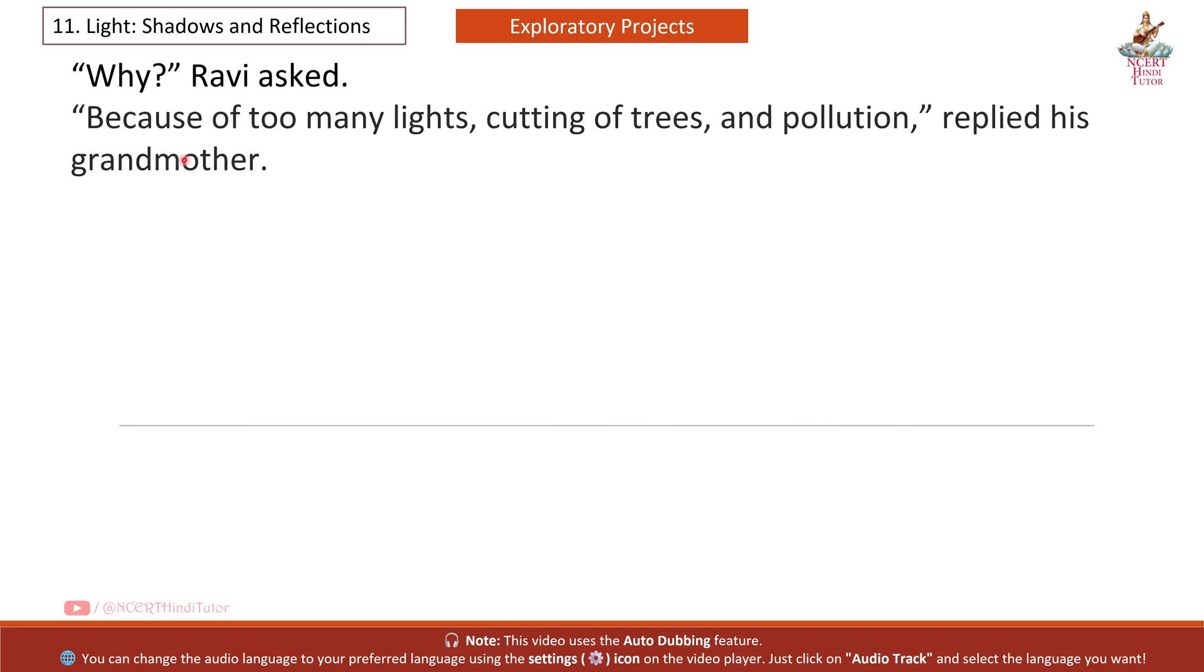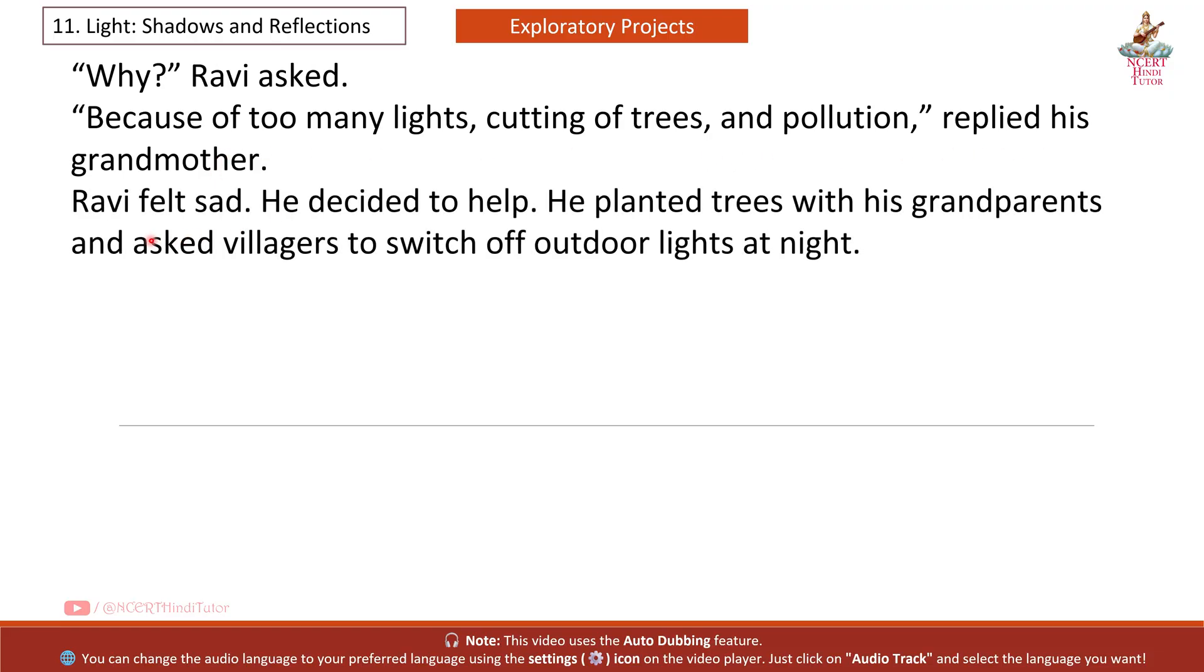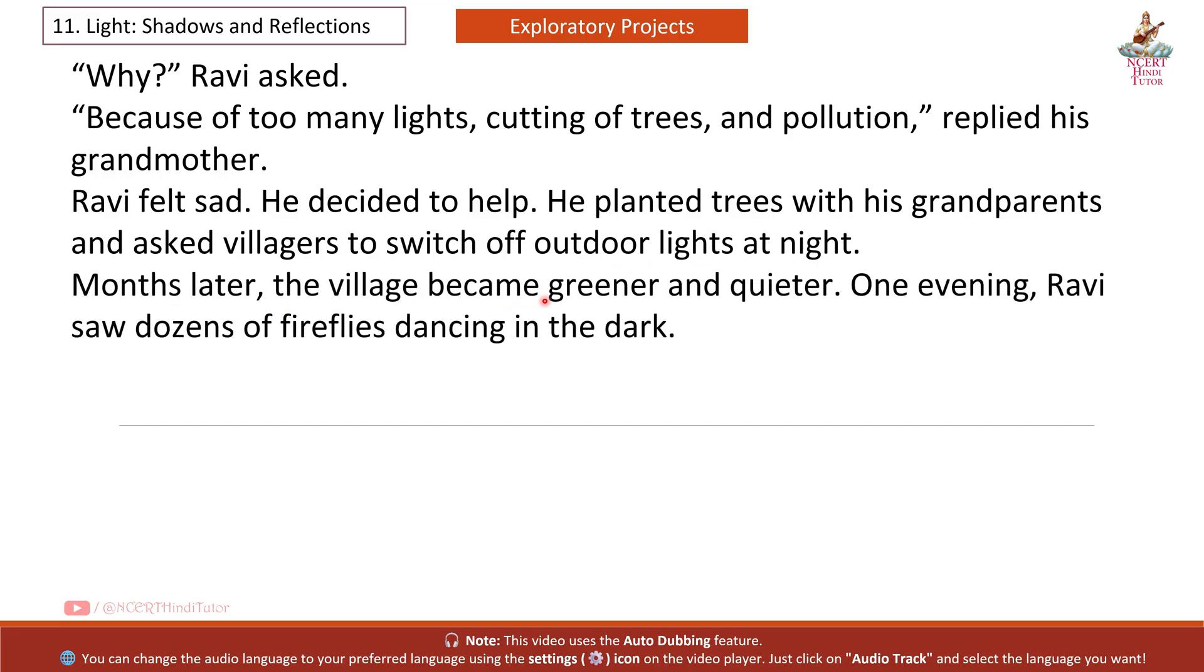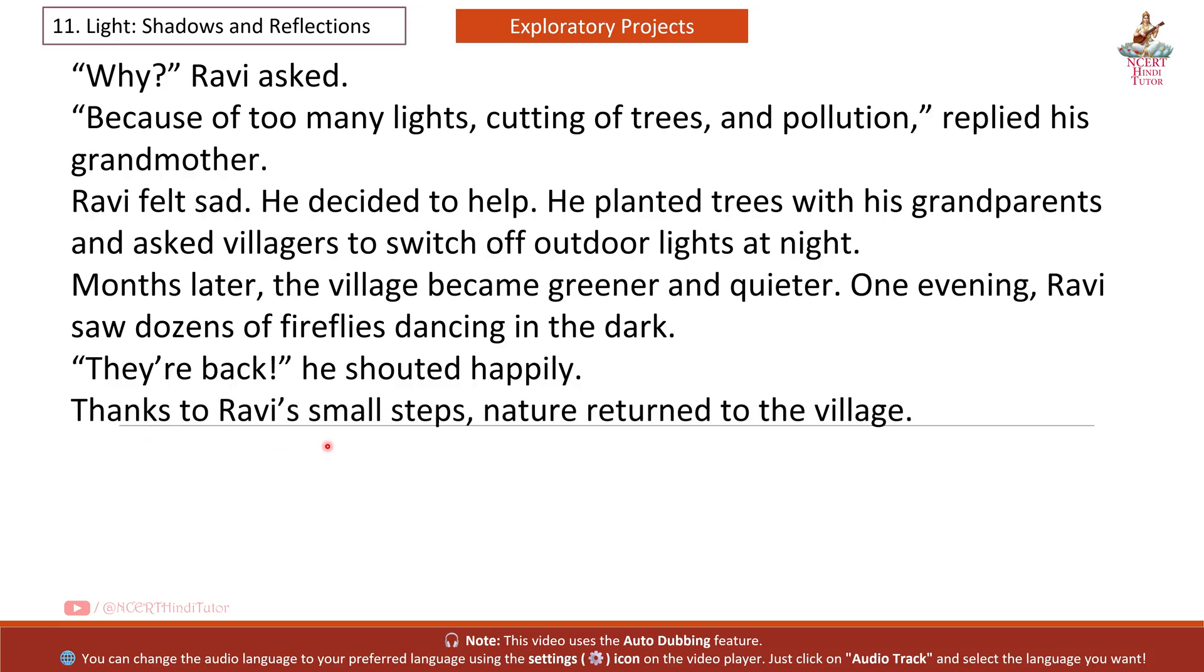Why? Ravi asked. Because of too many lights, cutting of trees and pollution, replied his grandmother. Ravi felt sad. He decided to help. He planted trees with his grandparents and asked villagers to switch off outdoor lights at night. Months later, the village became greener and quieter. One evening, Ravi saw dozens of fireflies dancing in the dark. They are back, he shouted happily. Thanks to Ravi's small steps, nature returned to the village.